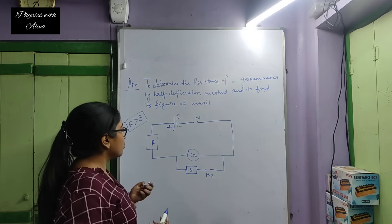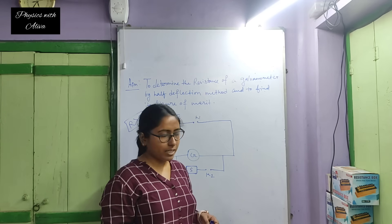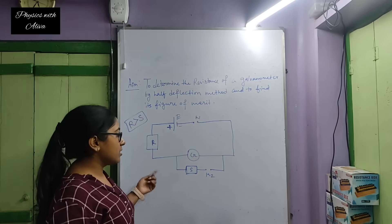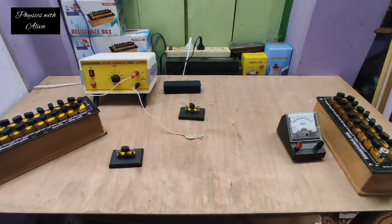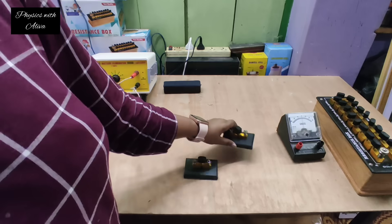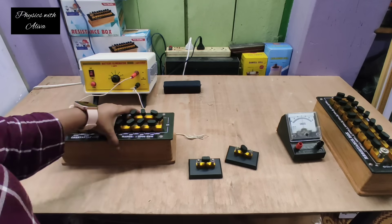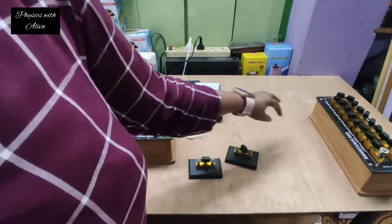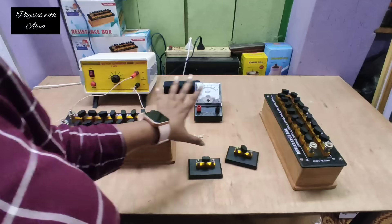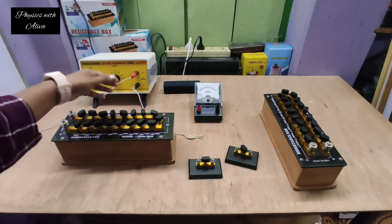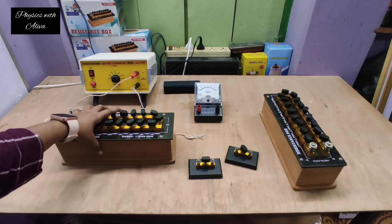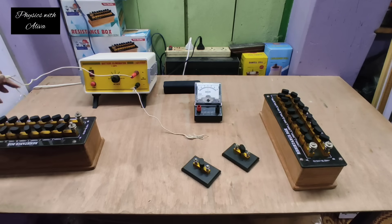If two resistance boxes are there in the practical, then you have to select the large resistance box as R and the small resistance box as S. Now we will see the apparatus. This is the battery eliminator, these are the two keys — key 1 and key 2. This is one resistance, this is the galvanometer, and this is the other resistance. We can take any one as R or any one as S, but if you have one large and one small resistance, always select the larger one as R and the smaller one as S.